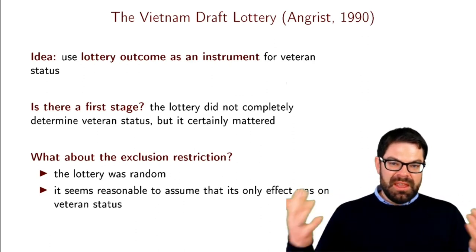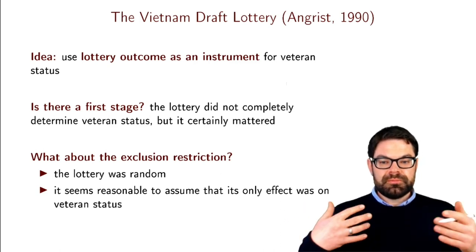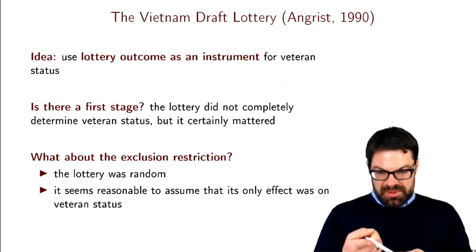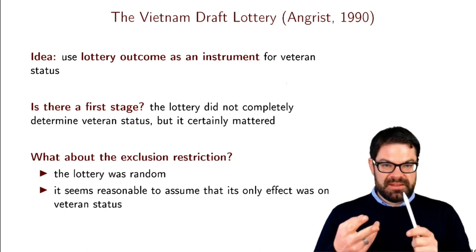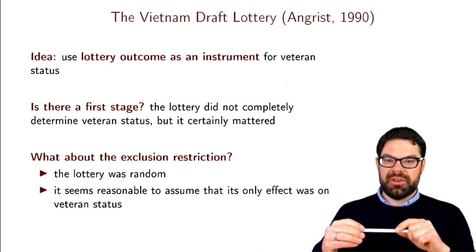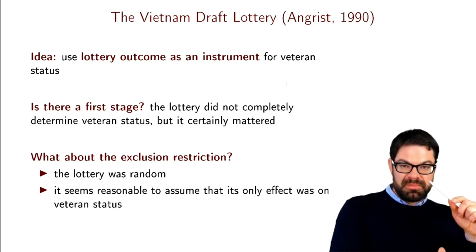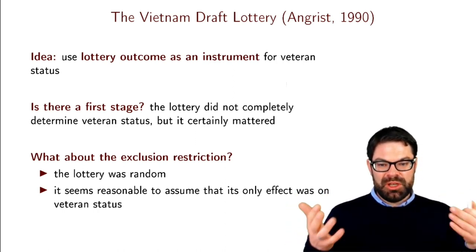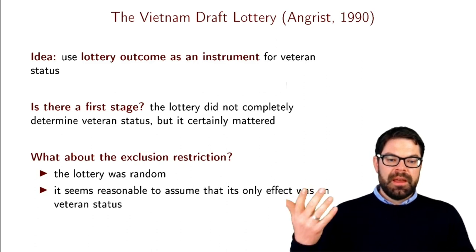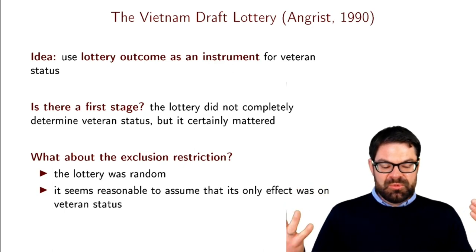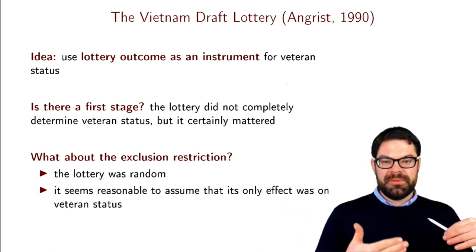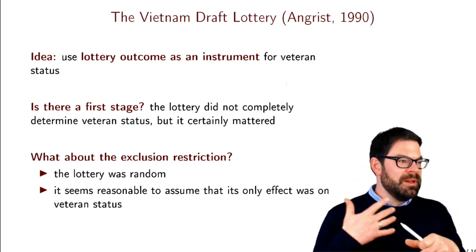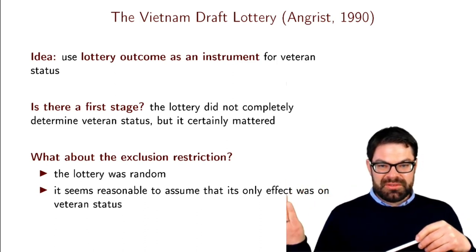The big question with any IV is the exclusion restriction. There are two aspects to instrument validity: first, is the instrument as good as randomly assigned? Second — the exclusion restriction — does it affect the outcome (earnings) only through its effect on the treatment and no other channel? The lottery was random, so we should not have an issue with conditional independence, and it seems reasonable it only had an effect on veteran status.